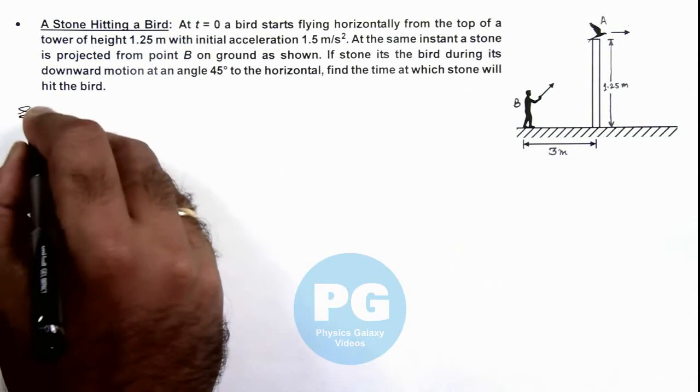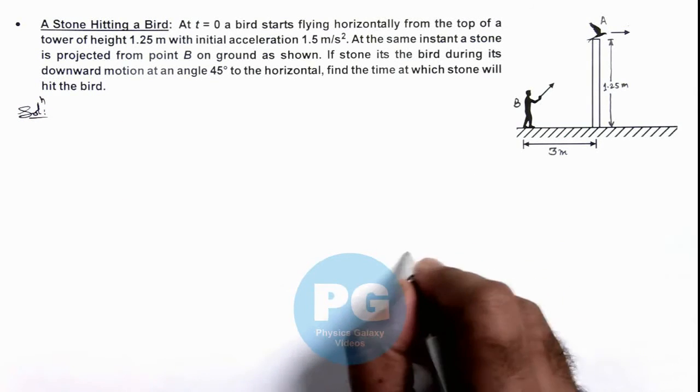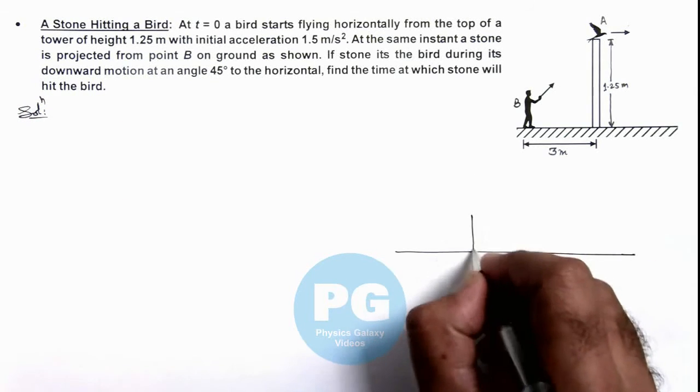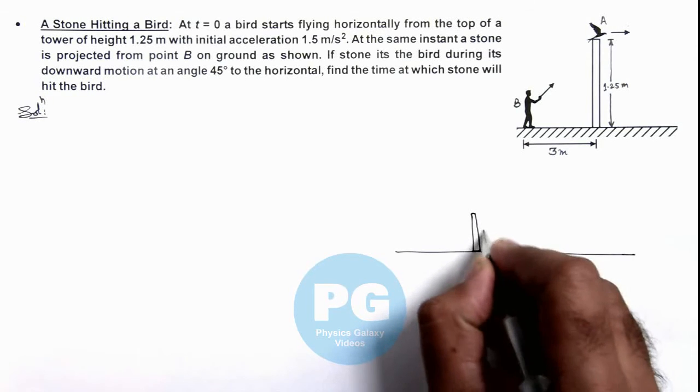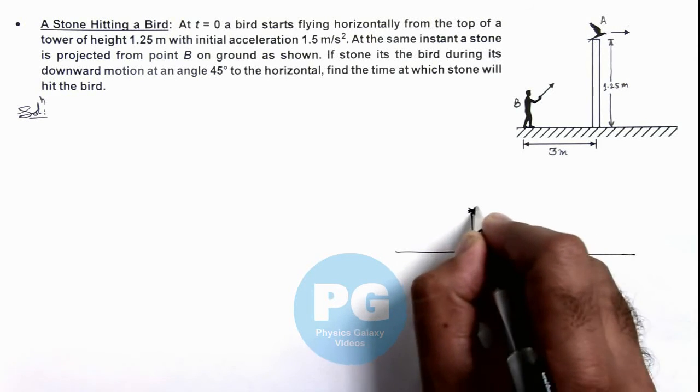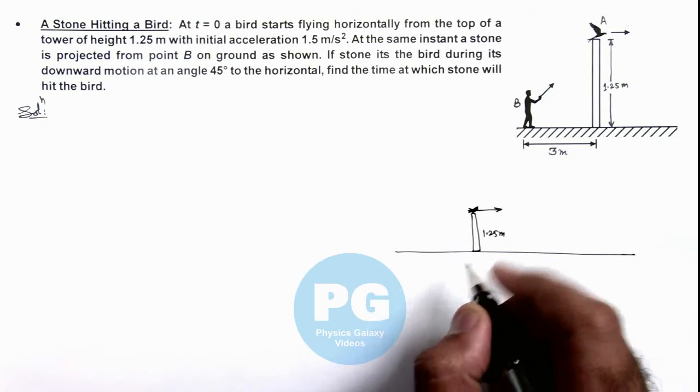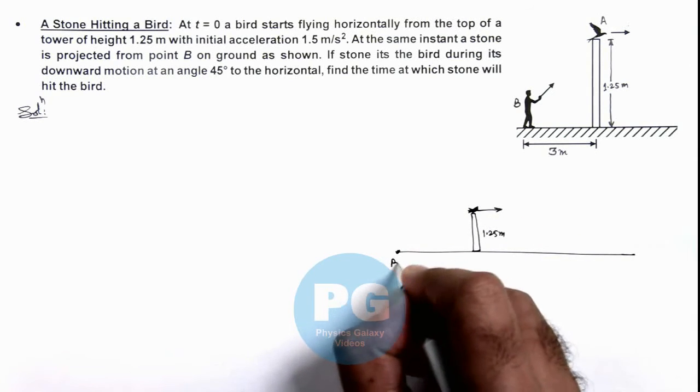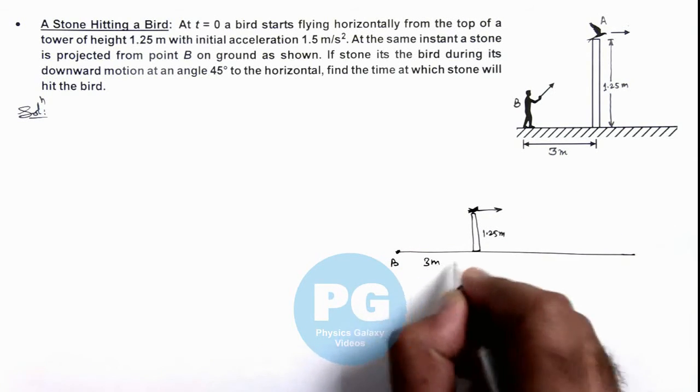In this situation, we can draw the picture again to analyze it. At a height 1.25 meter, this is the location from where the bird starts flying horizontally. This is point B located at a distance 3 meter from the tower.